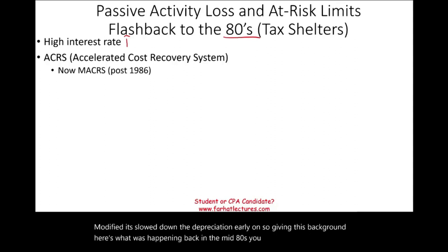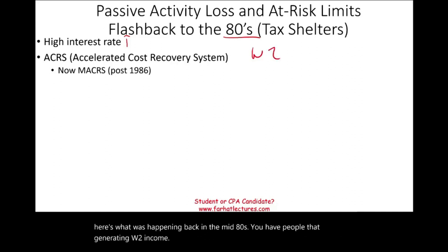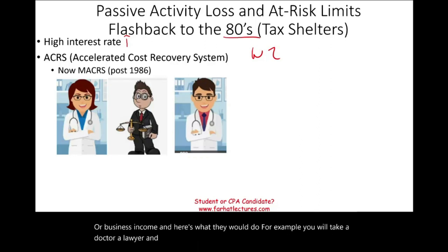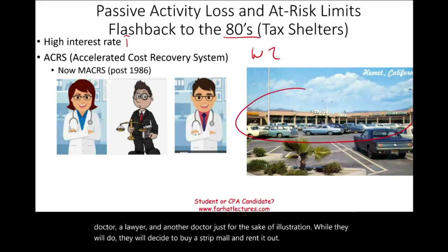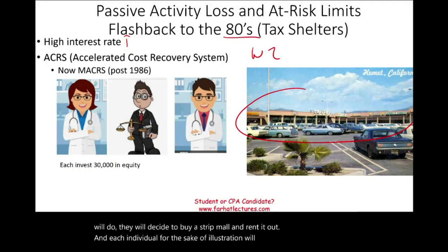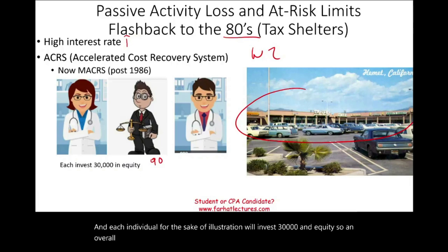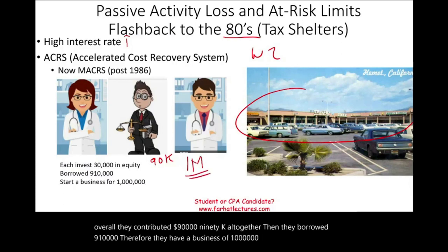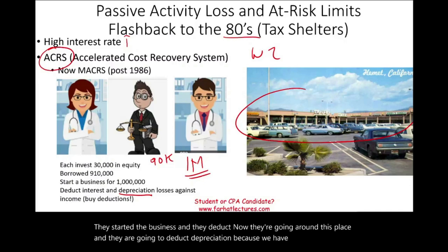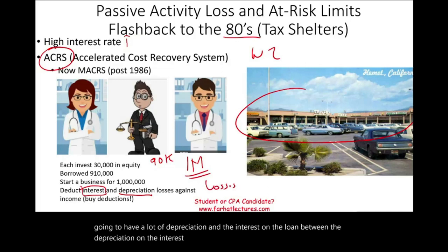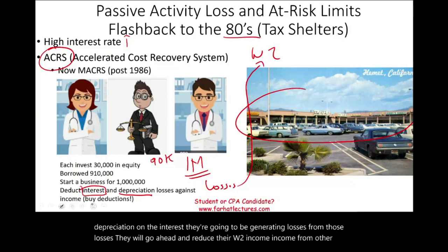You have people generating W-2 income or business income, and here's what they would do. For example, take a doctor, a lawyer, and another doctor just for illustration. They would decide to buy a strip mall and rent it out. Each individual would invest $30,000 in equity, so overall they contributed $90,000. Then they borrowed $910,000, giving them a business worth a million dollars. They started the business and began deducting depreciation under ACRS — which was accelerated — and the interest on the loan, generating losses.